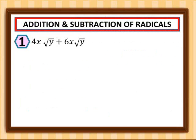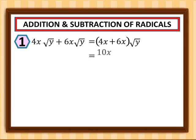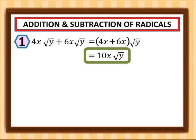Now let's have addition and subtraction of radicals. First example: 4x square root of y plus 6x square root of y. This is an example of like radicals since they have the same index 2 and the same radicand y. So we can combine them. We put them into one parenthesis: 4x plus 6x, then simply copy the square root of y. So 4x plus 6x gives us 10x, copy square root of y. So for number one, we have 10x square root of y.